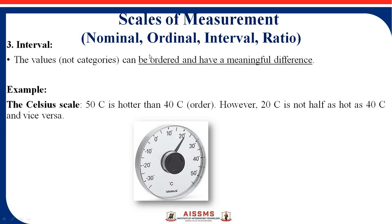The next scale of measurement is interval. Interval means all the data can be ordered and have a meaningful difference. Generally, temperature or time are examples of interval. For example, on the Celsius scale, 50 degrees Celsius is hotter than 40 degrees Celsius, or 20 degrees Celsius is not half as hot as 40 degrees Celsius. Temperature and time are examples of interval, and these are generally used in regression.